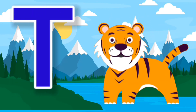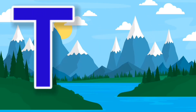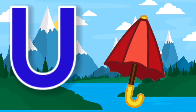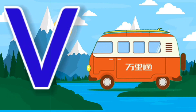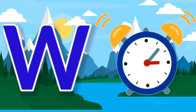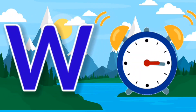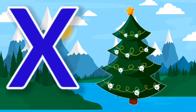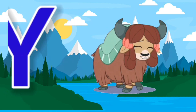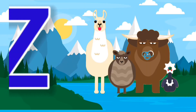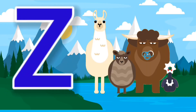S for sun, T for tiger, U for umbrella, V for when, W for watch, X for Xmas, Y for egg, Z for zoo.